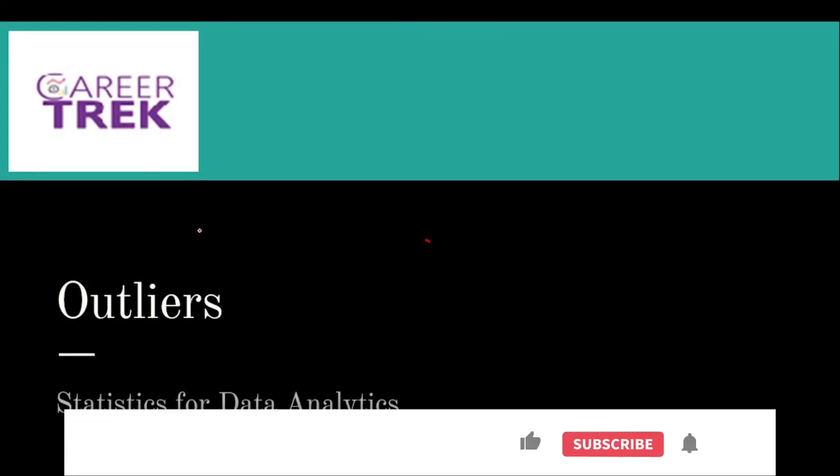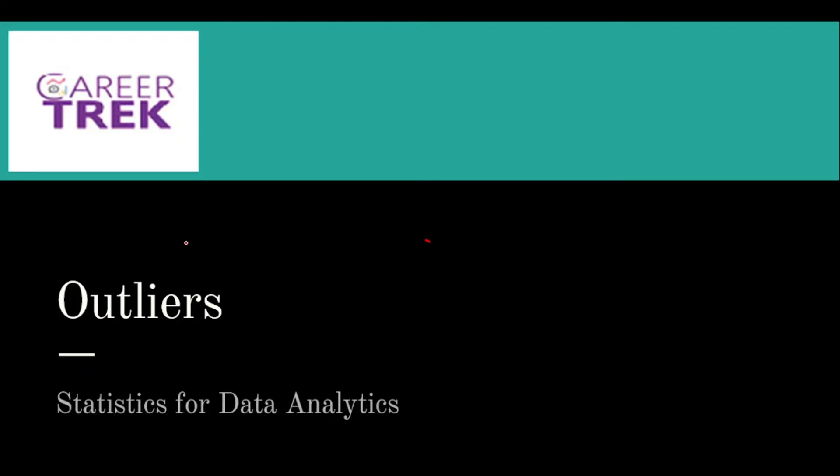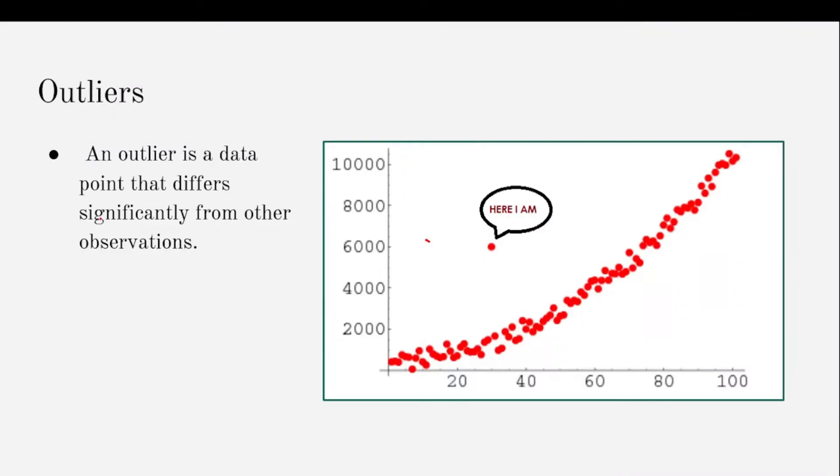Hello everyone, in this video we'll be discussing a very important topic for statistics: outliers. An outlier is an observation that deviates so much from other observations as to arouse suspicion that it was generated by some other mechanism. In simple words, an outlier is a data point that differs significantly from other observations.